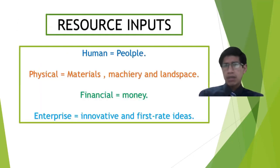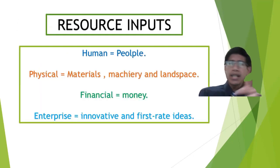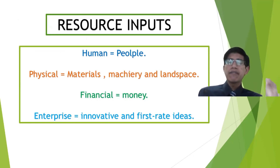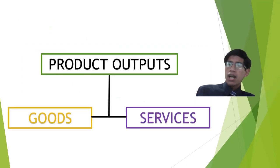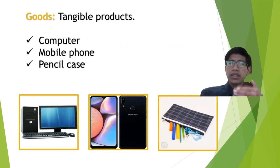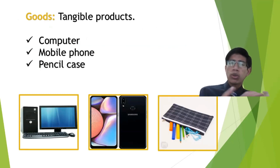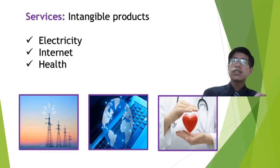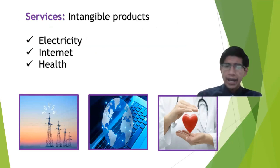Here is a summary of the resource inputs: human equals people, physical equals materials, machinery and landscape, financial equals money, enterprise equals innovative and first-rate ideas. As product outputs, we have goods — tangible products, for example a computer, mobile phone, or pencil case — and services — intangible products, for example electricity, internet, or health.